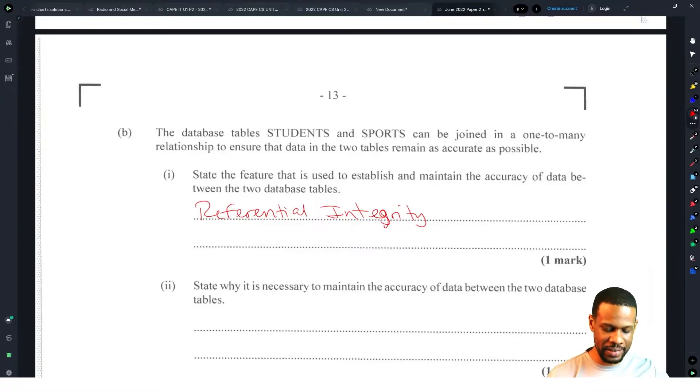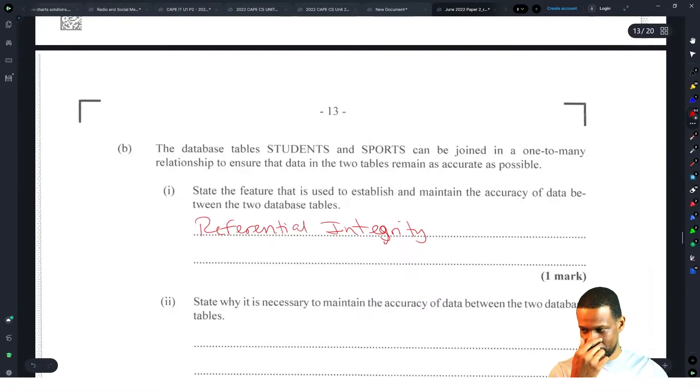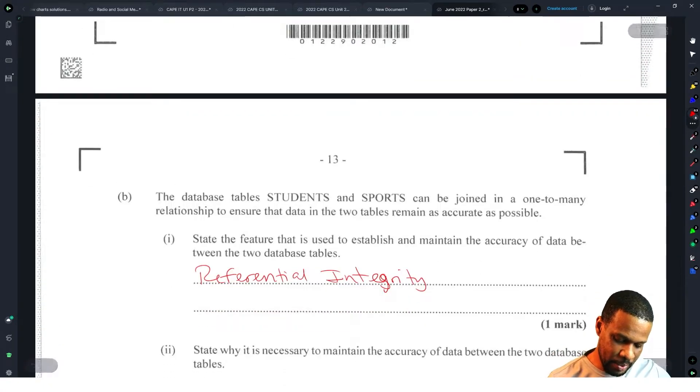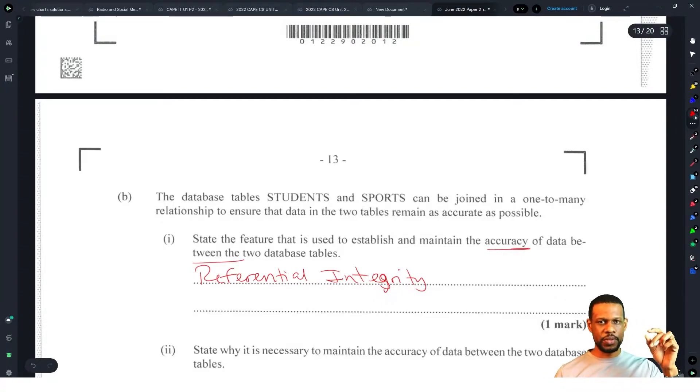That one was painful. Referential integrity means the accuracy of data between the two tables. When you create a relationship between two tables, you can't put one thing in one table without that match in the other table because you'll have a mismatch or imbalance.